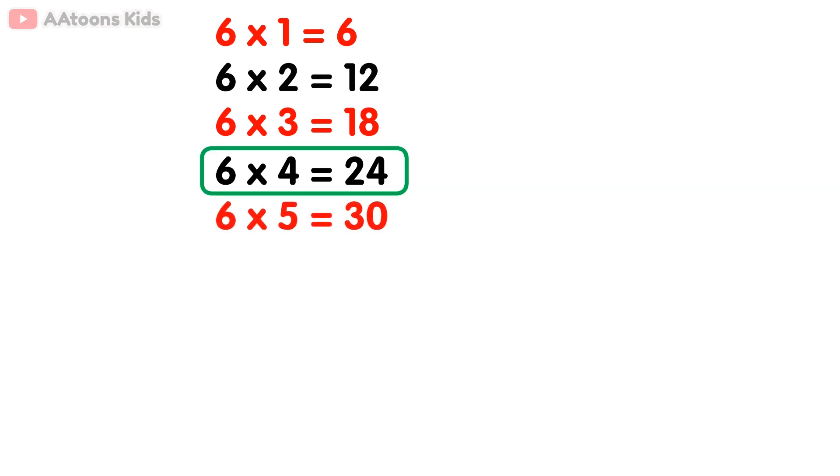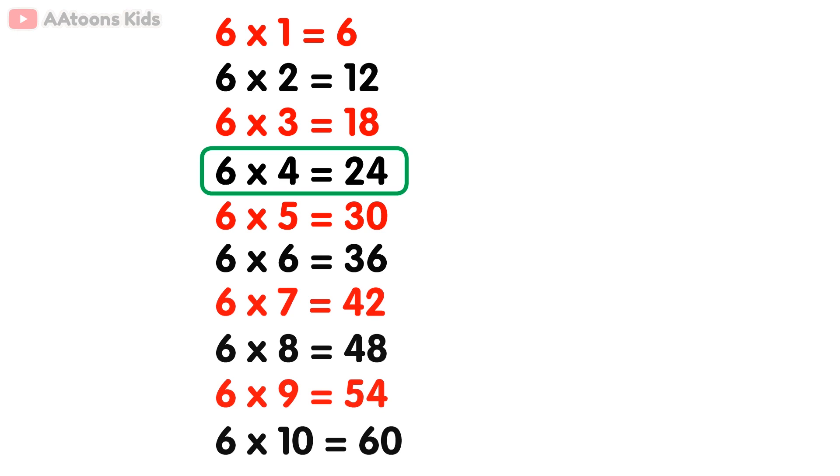6 times 5 is 30, 6 times 6 is 36, 6 times 7 is 42, 6 times 8 is 48, 6 times 9 is 54, 6 times 10 is 60.